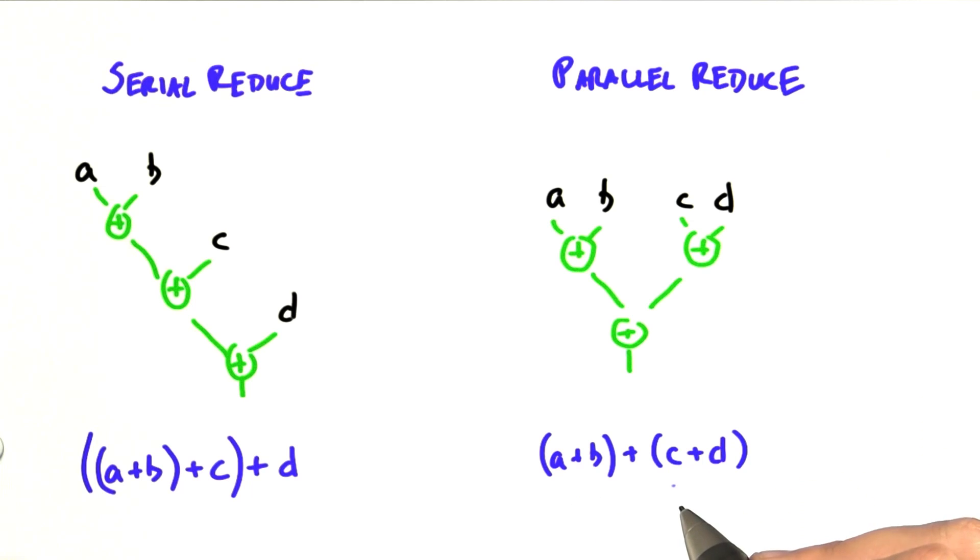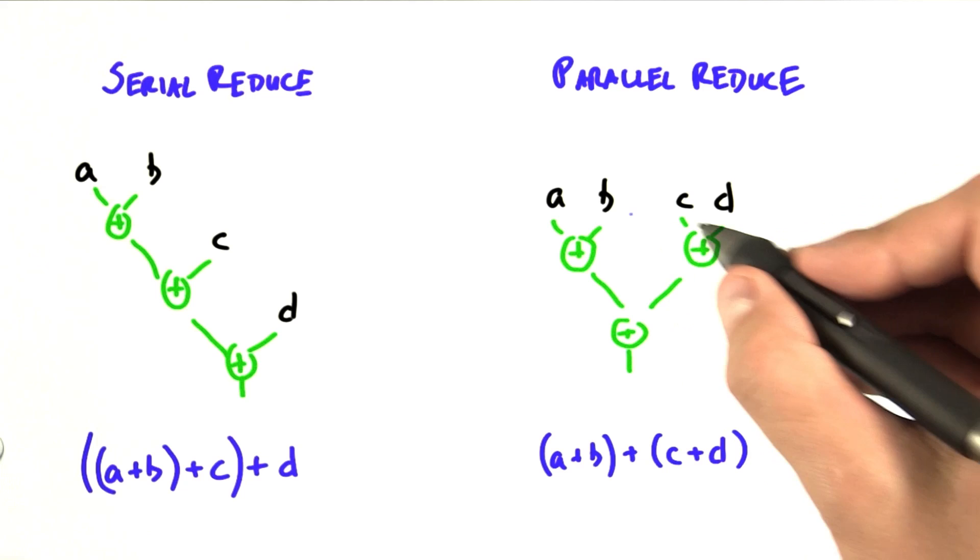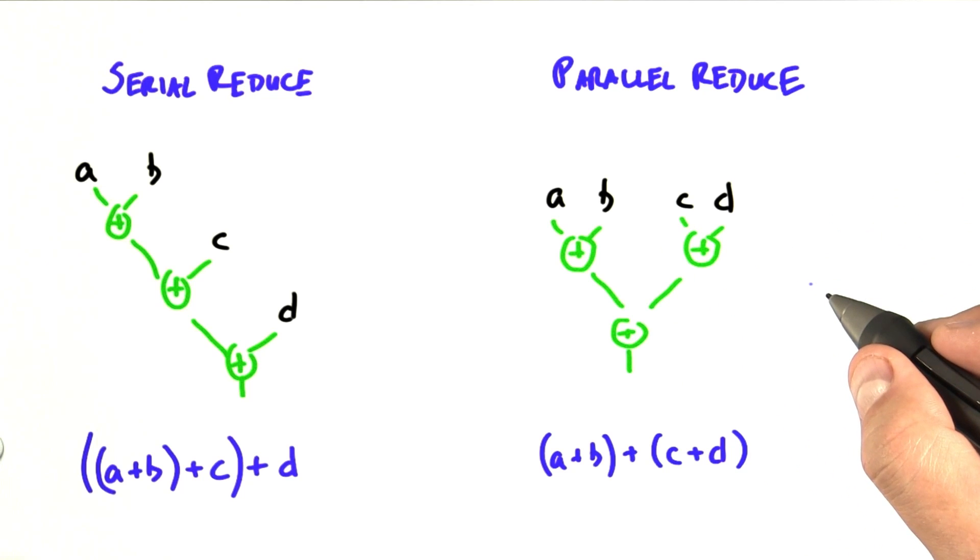Now, what we've done to do parallel reduce is regrouping these operations in a different order, and this exposes more concurrency. We now have the ability to run multiple operations in parallel at the same time.